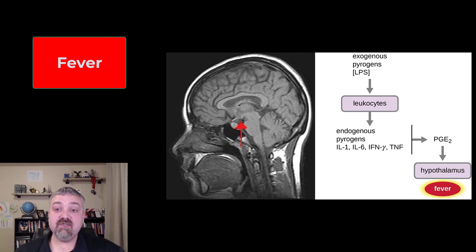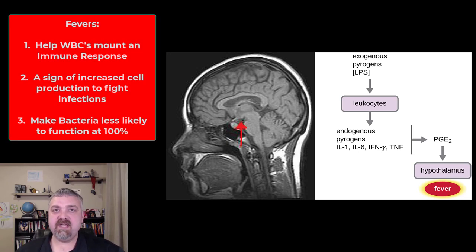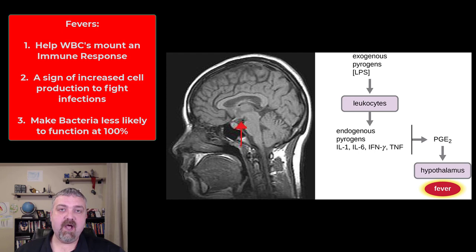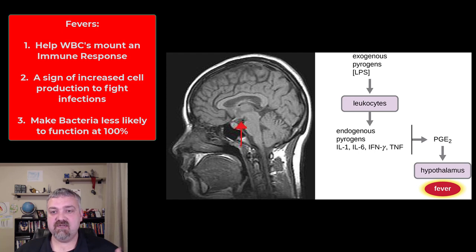As far as its functions, it appears that raising the core temperature has a couple of functions. Number one, it does appear to help your white blood cells kill pathogens better. Number two, I think it's just because your metabolism is increasing because you're cloning millions and billions of cells.